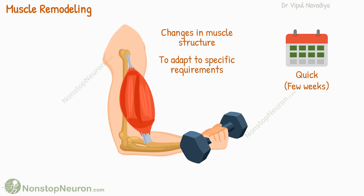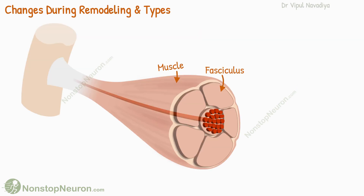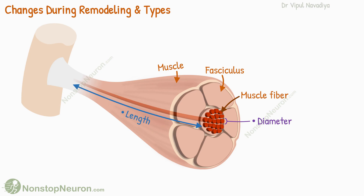This diagram shows the gross anatomy of a skeletal muscle. We know that muscles are made up of muscle fibers. During remodeling, several parameters may change. The diameter of the muscle fibers can increase, making them larger, and the length of the muscle can also be adjusted to maintain proper muscle contraction.